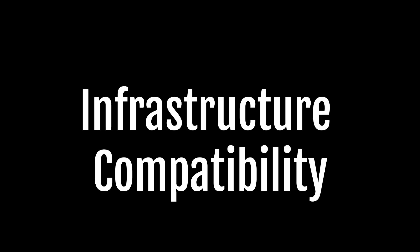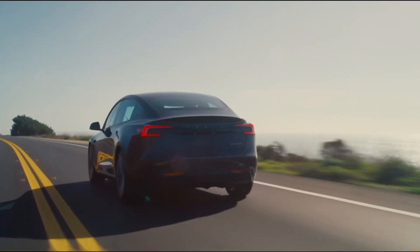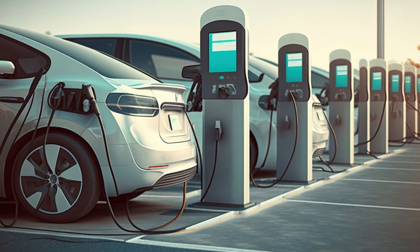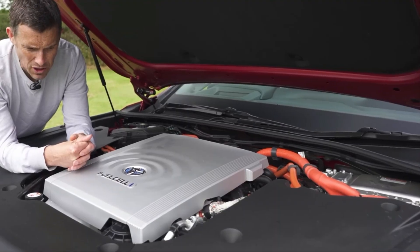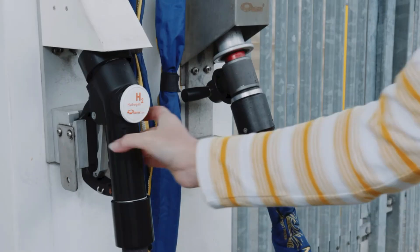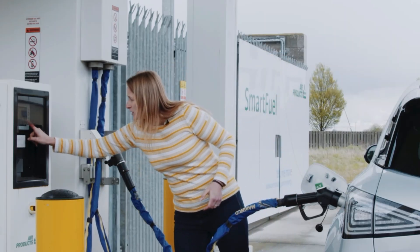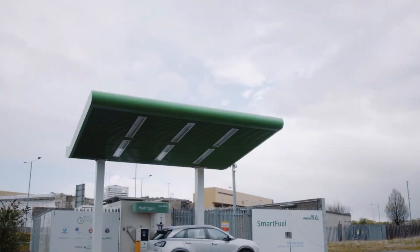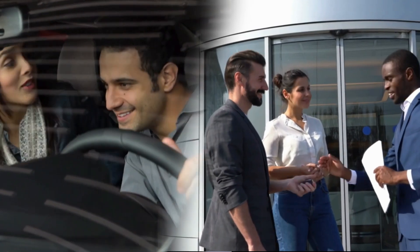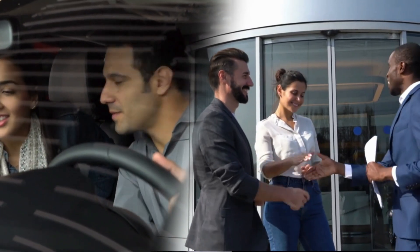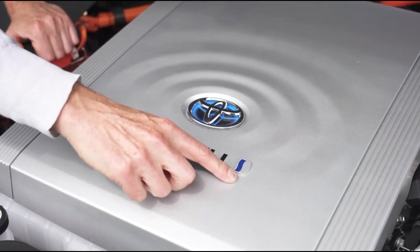Infrastructure Compatibility: One of the key obstacles hindering the widespread adoption of electric vehicles is the lack of charging infrastructure. Toyota's water engine presents a unique advantage in this regard. Since the refueling process is similar to traditional gasoline-powered vehicles, the existing infrastructure can be leveraged, eliminating the need for extensive charging networks. This compatibility ensures a smoother transition and wider accessibility for consumers, potentially propelling the water engine's popularity.